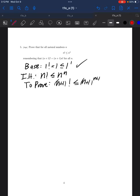Again, my scratch paper here. I know that I'm going to want to use n plus 1 factorial is equal to n plus 1 times n factorial. If I plug that into the thing I'm trying to prove, I get that n plus 1 times n factorial is less than or equal to n plus 1 to the n plus 1, which is n plus 1 times n plus 1 to the n.